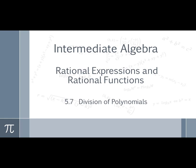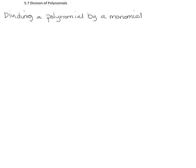Greetings and welcome to Intermediate Algebra Rational Expressions and Rational Functions, Lesson 5.7: Division of Polynomials. In Division of Polynomials, there are two types that we're going to work with: dividing a polynomial by a monomial — a multiple-term object divided by a one-term object — and dividing a polynomial by a polynomial. Let's take a quick look at dividing a polynomial by a monomial.